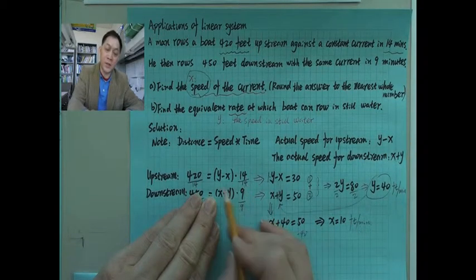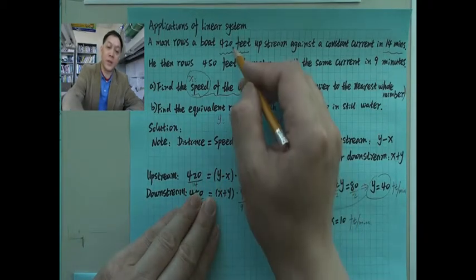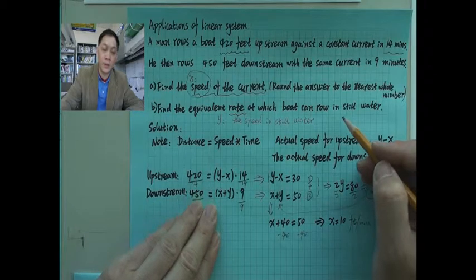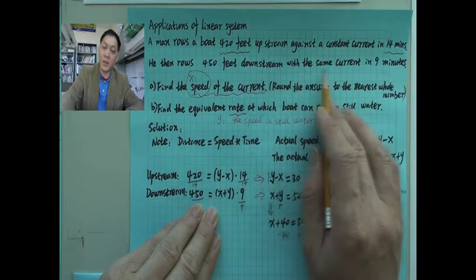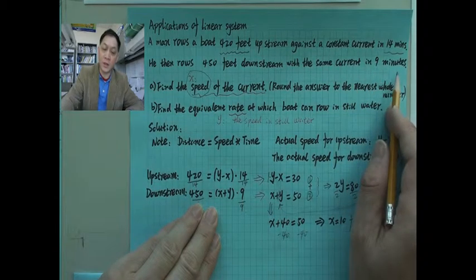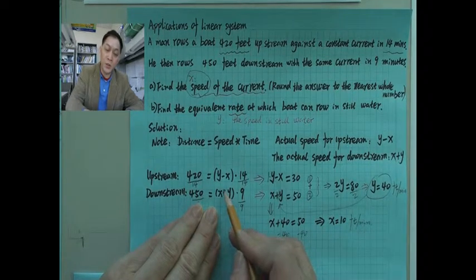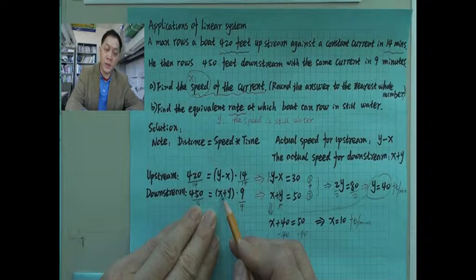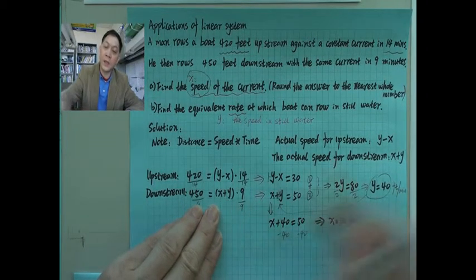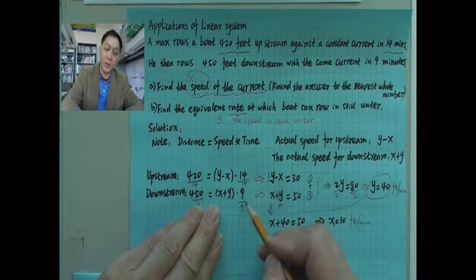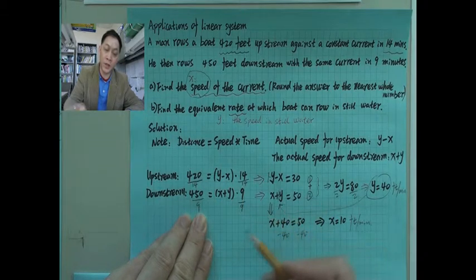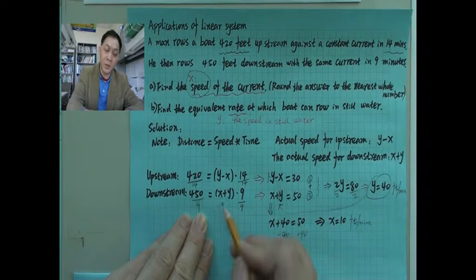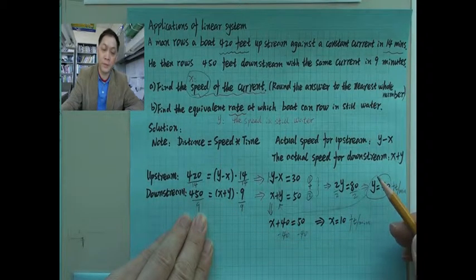The second sentence says he rows 450 feet downstream in 9 minutes. The actual downstream speed is x plus y. In only 9 minutes — shorter than the upstream trip — he covers a longer distance of 450 feet, because going downstream the speed is faster: it's his rowing speed in still water plus the current speed.